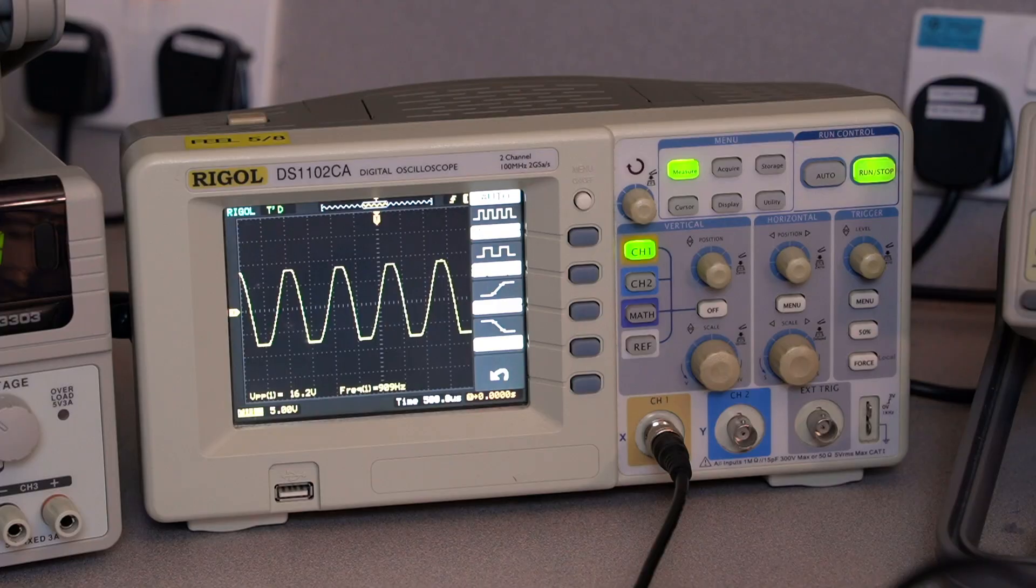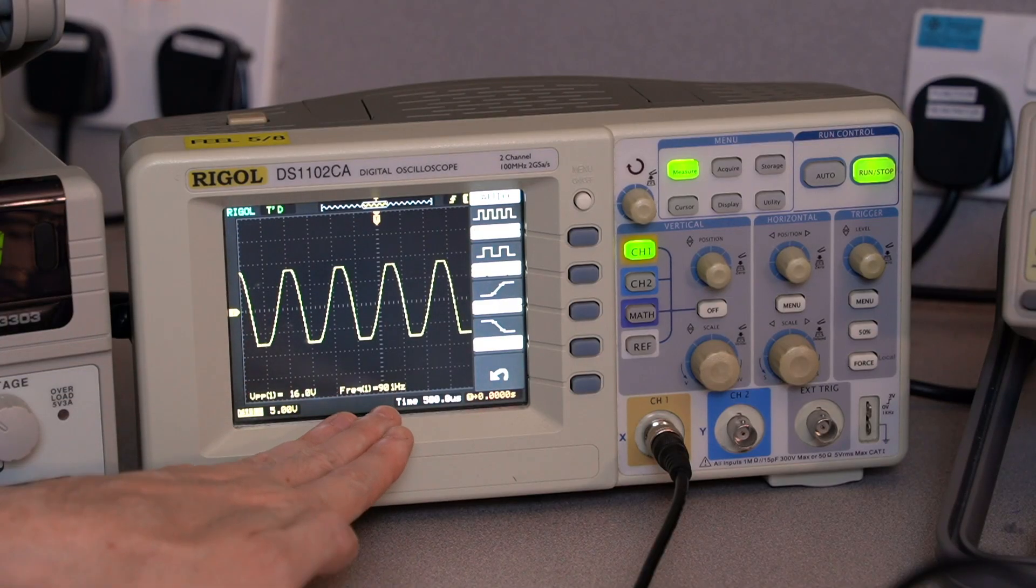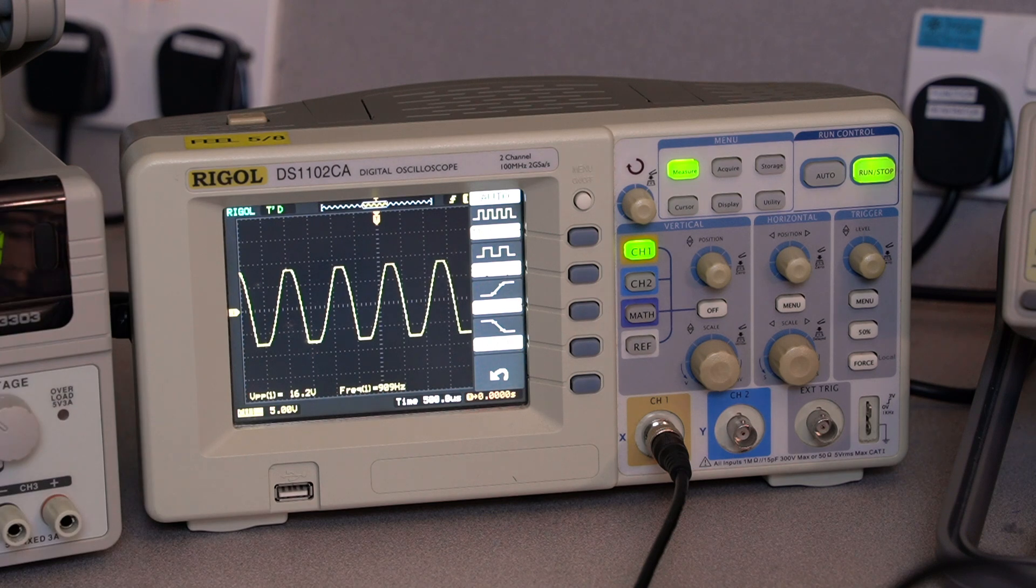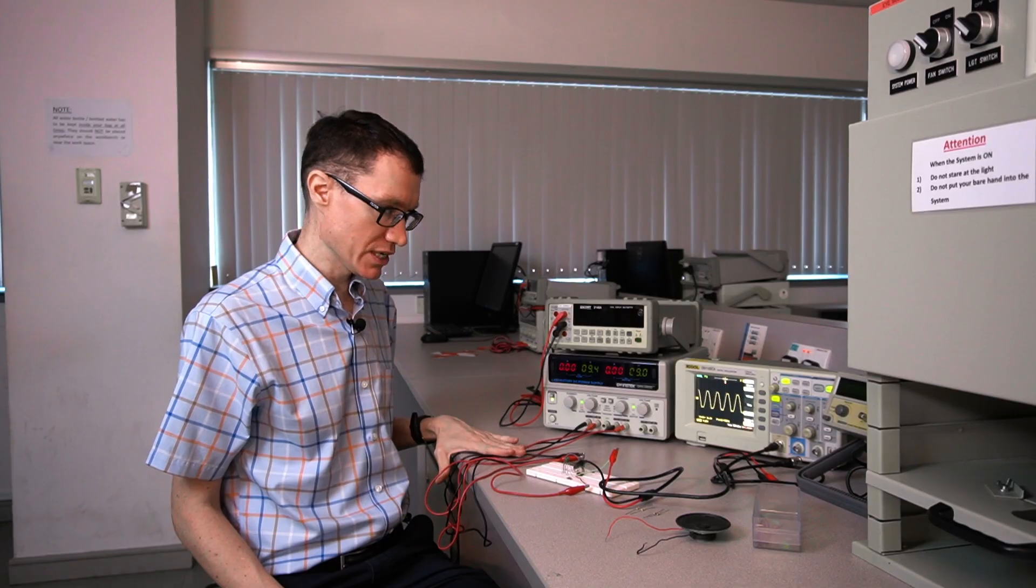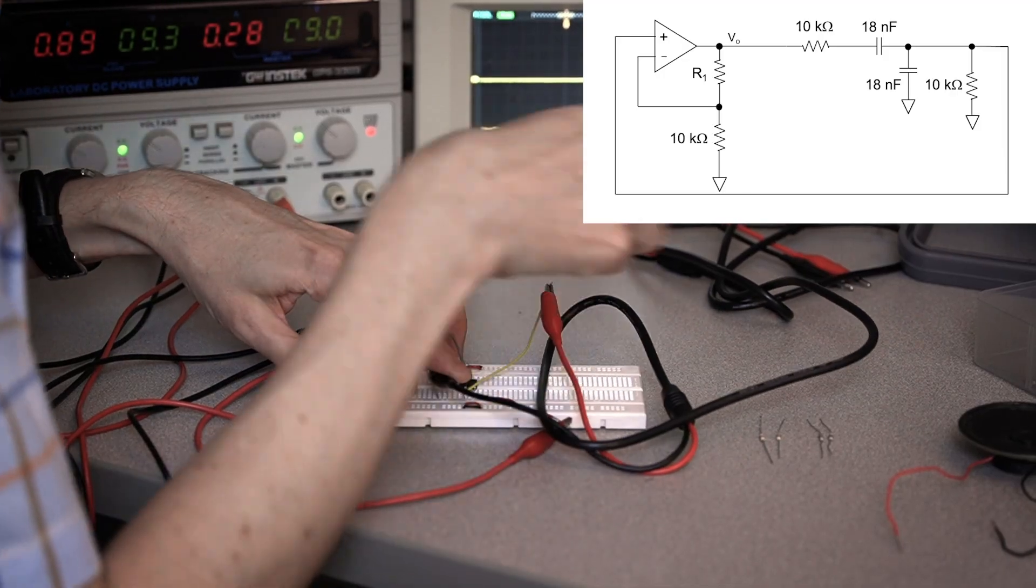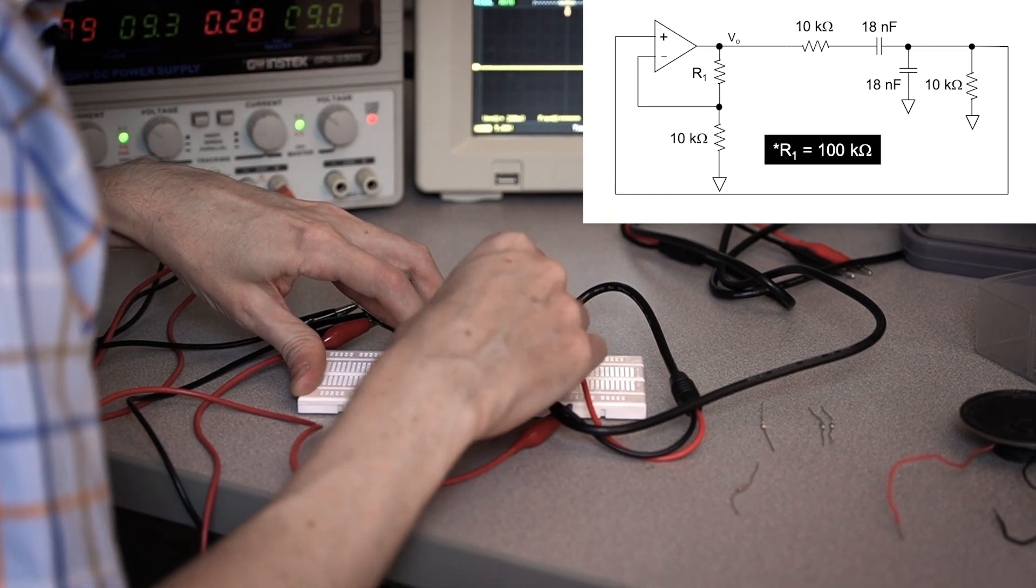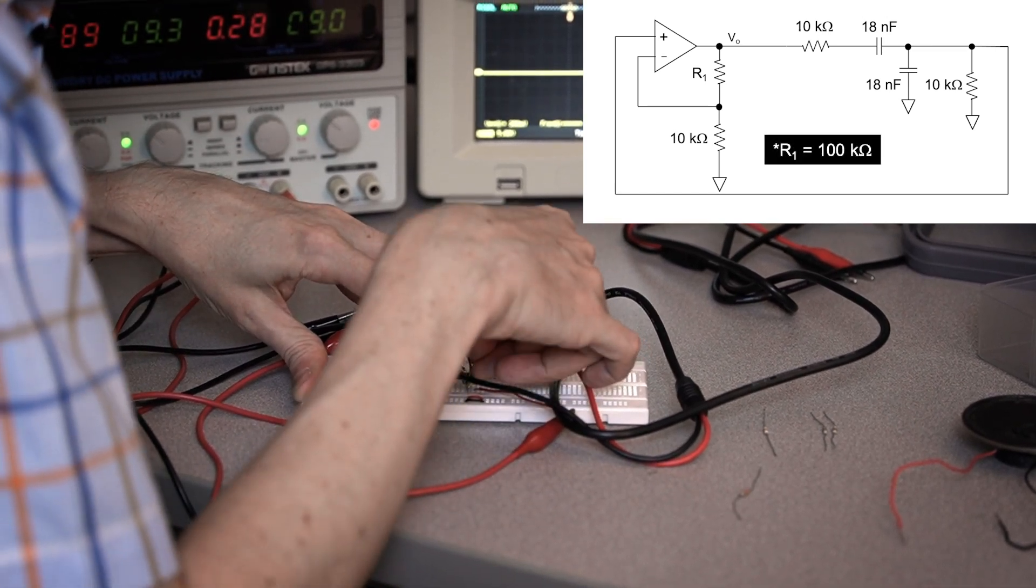Let's check the frequency. We expected a frequency of 880 hertz, and we're getting a frequency of 909 hertz. So we're reasonably close to our design frequency here. What I want to do now is choose an even larger value for R1. Let's choose 100 kiloohms to see what the signal would look like in that case.